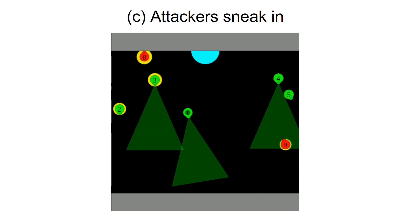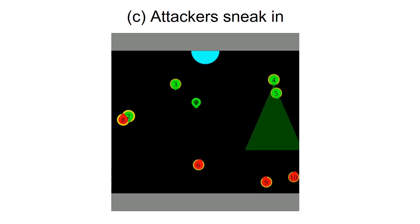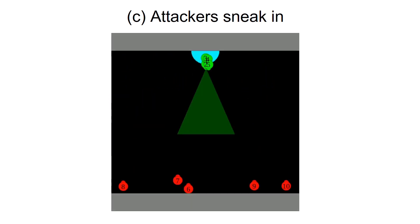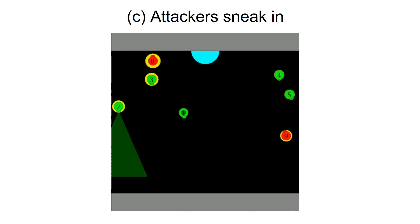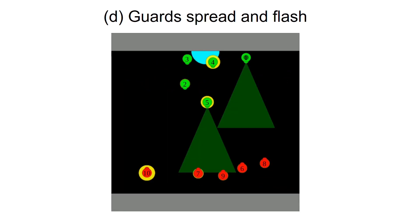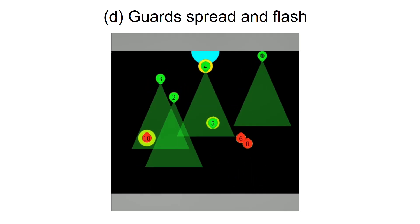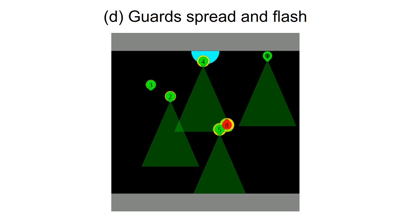As guards block entry from the front, attackers approach from all the directions. Some of them get killed but one of them manages to sneak in from the side. In response to the sneaking behavior, the guards learn to spread out and kill all the attackers before they can sneak in.